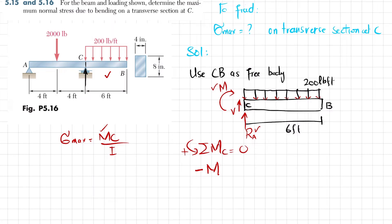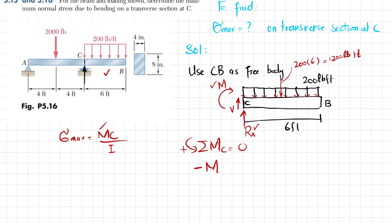Now the moment due to this 200 pound uniformly distributed load: you have to convert this load into a point load by multiplying 200 times the length of the beam which is 6 feet, giving 1200 pounds. The perpendicular distance is half of this, so 3 feet. So minus 1200 times 3, because it produces a clockwise moment.